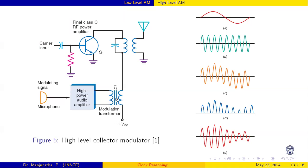Whenever the message signal appears together with the carrier, this signal is added or subtracted with VCC. When the message signal is positive, it adds to VCC; when negative, it subtracts from VCC. That variation appears at the collector, causing the transistor to conduct more or less — so whatever carrier signal was given gets varied in accordance with the message signal. This produces a very high power output, as the collector current variation is very large.